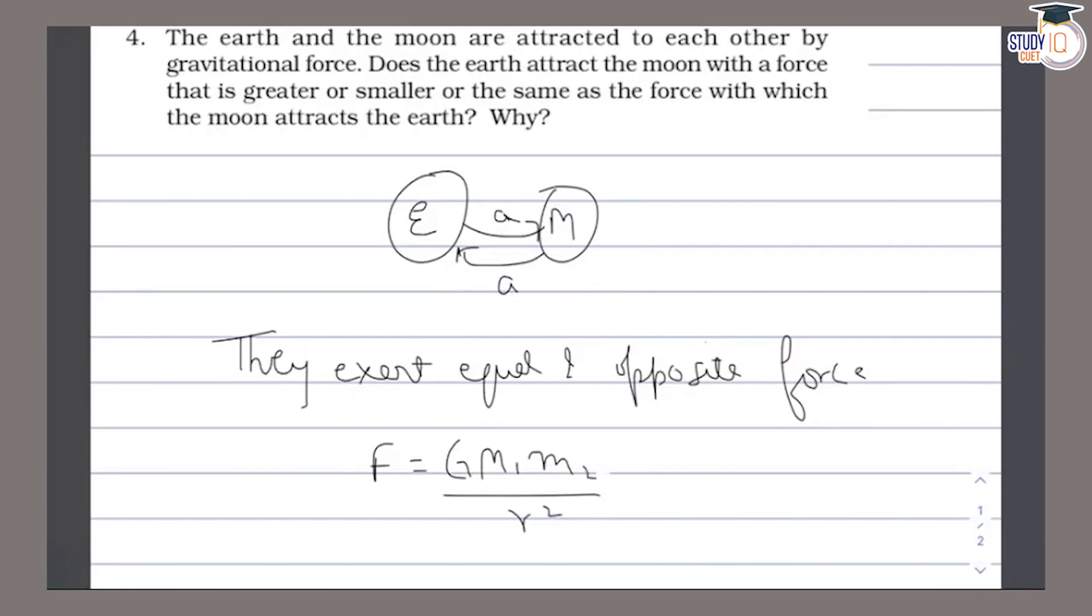The forces are equal and opposite. The force formula is F = GM1M2 upon R square. M1 is the mass of one body which is the Earth, M2 is the mass of the other body which is the moon, and R square is the distance between the two bodies.